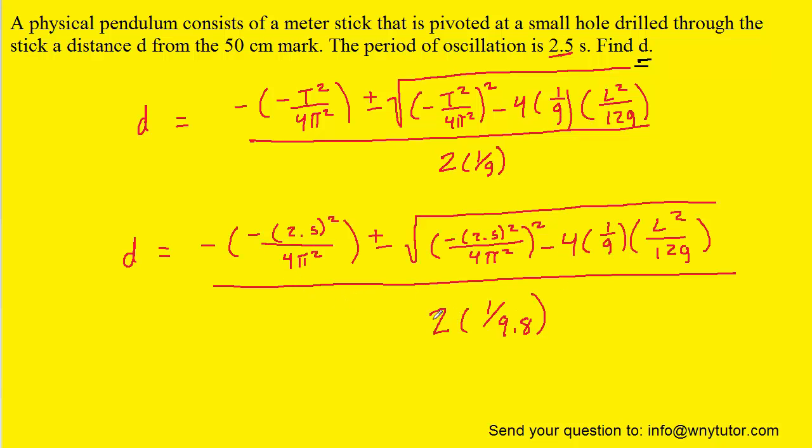Now when you calculate this on your calculator it might be a bit of a challenge to do that. You're going to get two values. One value turns out to be approximately 1.50 meters. The other value turns out to be approximately 0.056 meters.